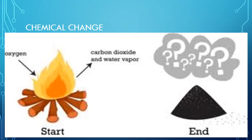Chemical changes are not reversible because we can't get back the original substance as a new substance is formed. For example: ash from firing wood, paper from wood. If we make curd from milk, is it possible to get back the milk from the curd? No, because after making curd we cannot get back the milk. So it is also a chemical change — we can't get back the original substance, and in its place a new substance is formed.